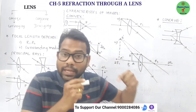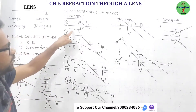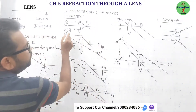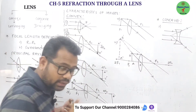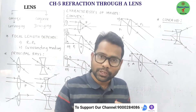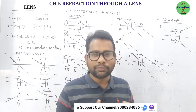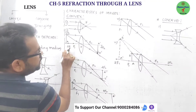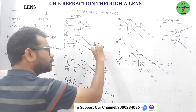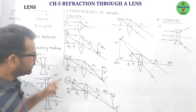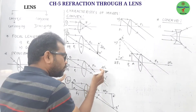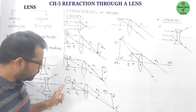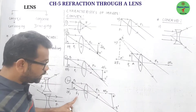For a convex lens, the image characteristics are: when the object is at infinity, the image forms at the focus — real, inverted, and highly diminished. When beyond 2F₁, the image forms between F₂ and 2F₂ — real, inverted, and diminished. When at 2F₁, the image forms at 2F₂ — real, inverted, and the same size as the object.